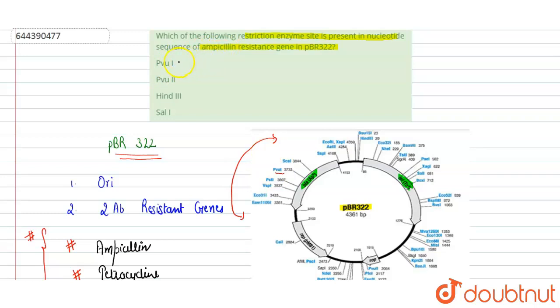PvuI is a correct option. Next is PvuII — PvuII is not the restriction enzyme site present in the ampicillin resistance gene, so we can say that is incorrect.